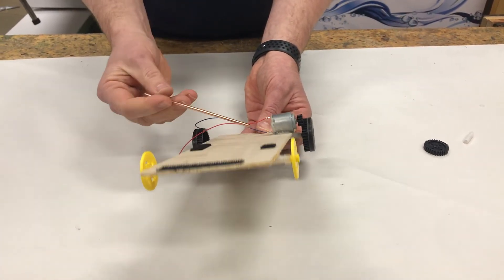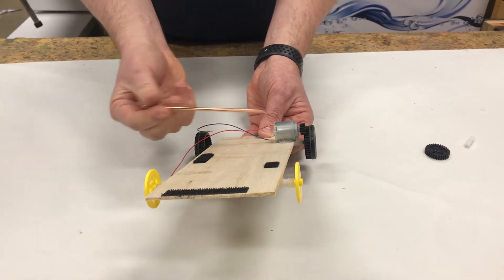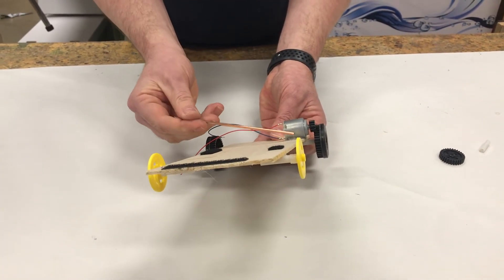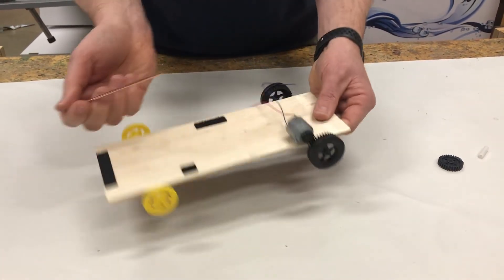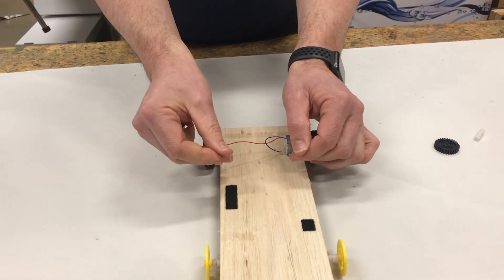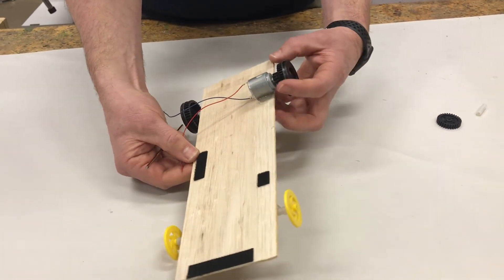Once you've got your car going straight, then the next piece to add on—not the last piece but almost the last piece—is going to be the motor, this one right here. Again, you're going to use hot glue to attach your motor as well. The motor is what will take electricity from your battery and will run this little gear here which makes your wheel spin.